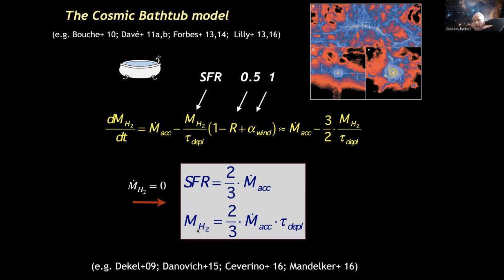The gas mass is the star formation rate times the depletion time, which is also the accretion rate times the depletion timescale. That explains why galaxies are gas-rich — not because they accrete a lot of gas, but because the depletion timescales are very long at 10^9 years rather than 10^6 years. If the depletion time were only a few times 10^6 years, no galaxy would ever have much gas, independent of whether it's young or old.